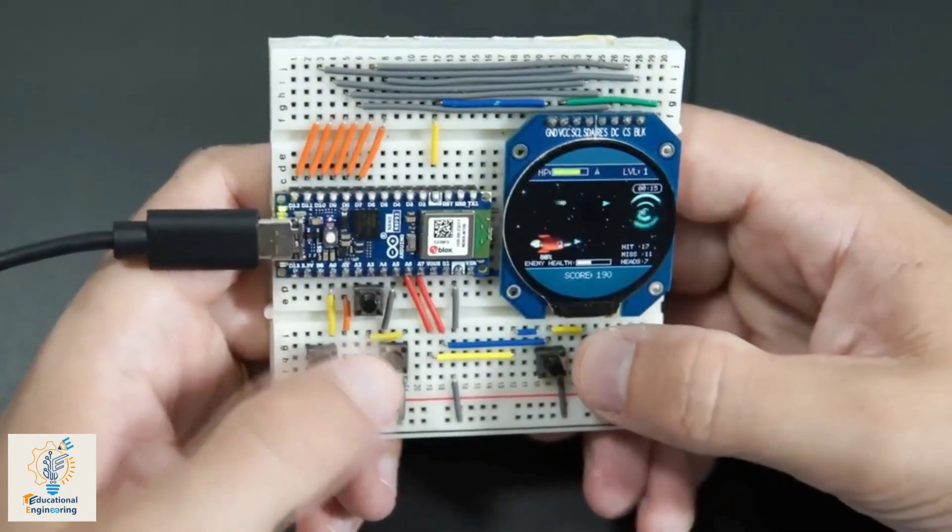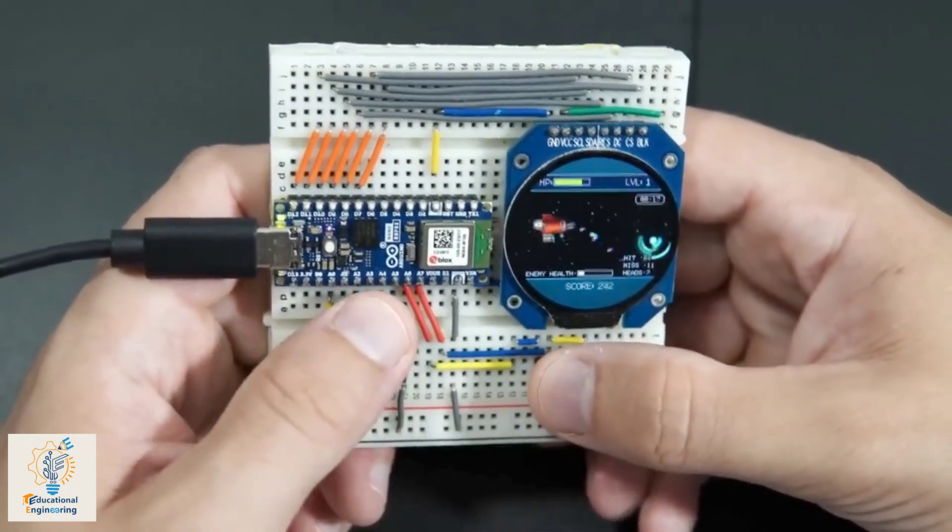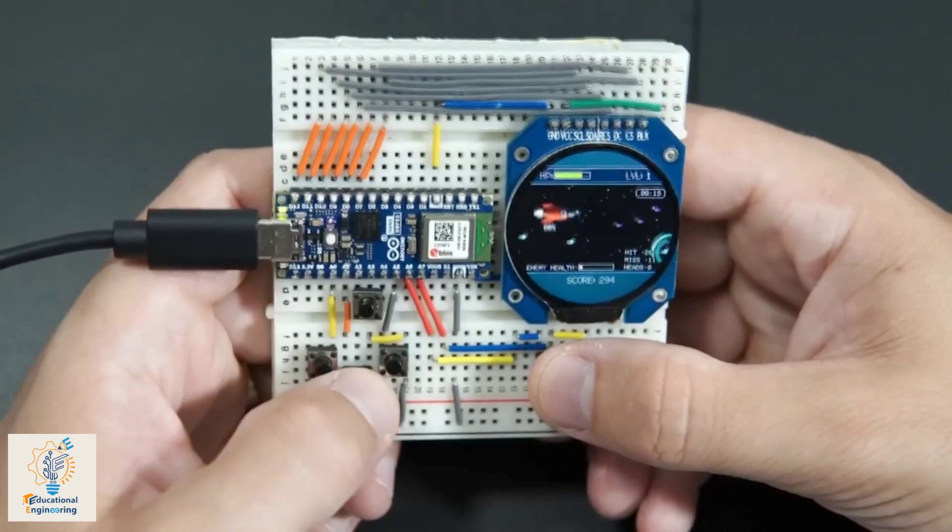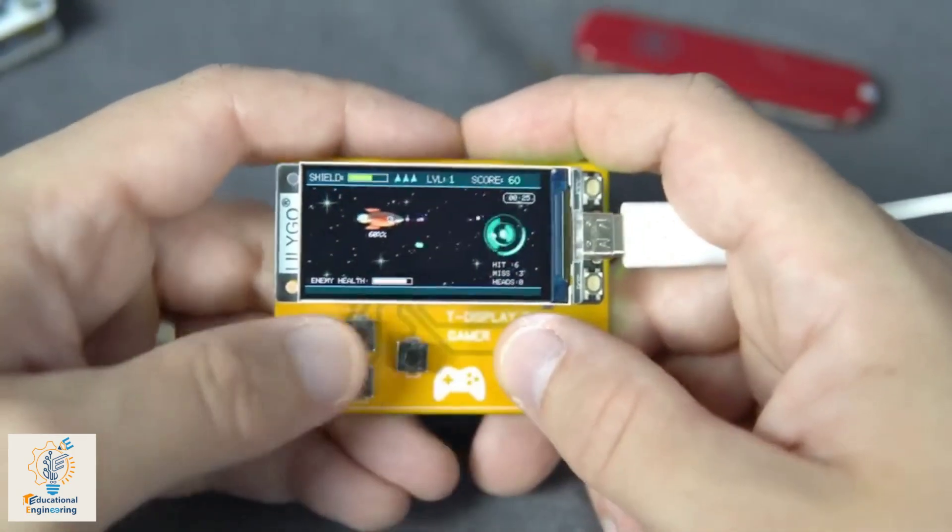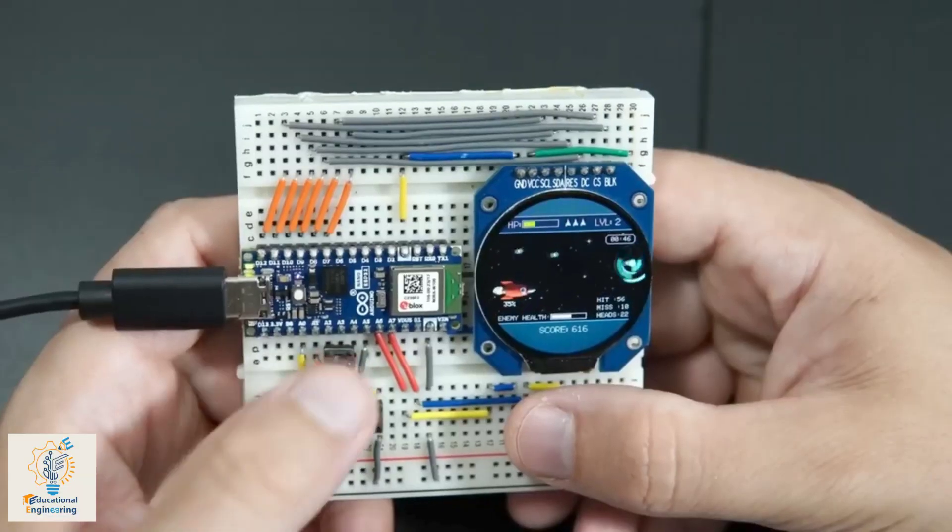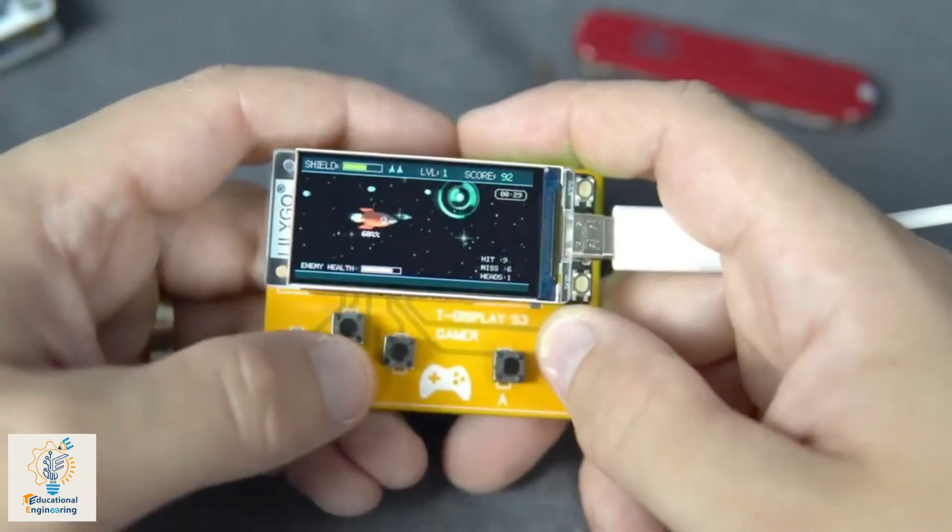In the next setup, he used six push buttons to play the space shooter game. While playing, the round display gave him a better experience as compared to the square one. By the way, which one would you prefer? Tell us in the comments!